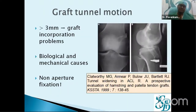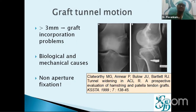Regarding graft-tunnel motion, a publication in Knee Surgery Trauma found that more than 3 mm mismatch of the tunnel-to-graft diameter causes graft incorporation problems. Biological and mechanical factors are the main reasons for graft-tunnel motion, tunnel widening, and related issues. Non-aperture fixation appears to have higher graft-tunnel motion problems.